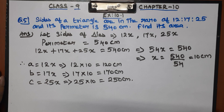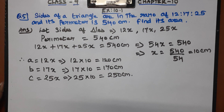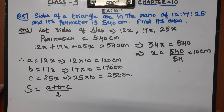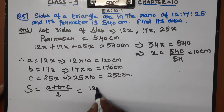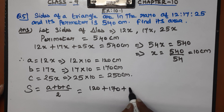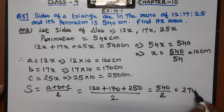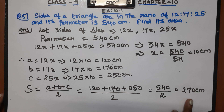Now that we have found a, b, and c, we find the semi-perimeter. The semi-perimeter formula is s = (a + b + c) divided by 2. So s = (120 + 170 + 250) divided by 2 = 540 divided by 2 = 270 cm.